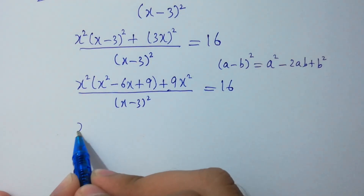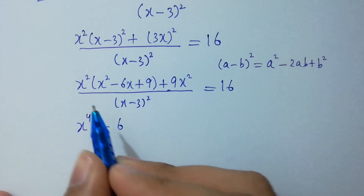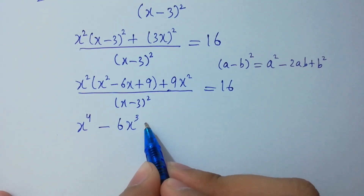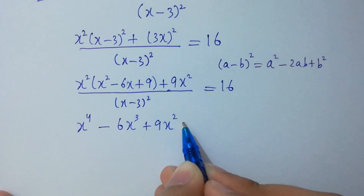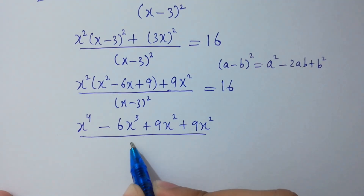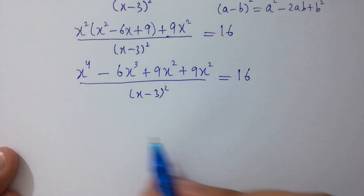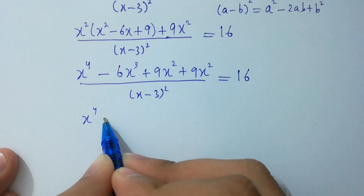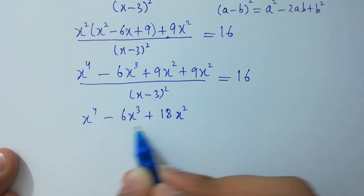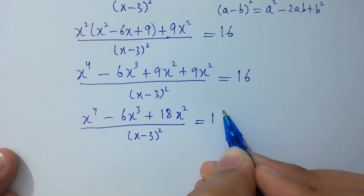Expanding x²·(x - 3)²: x² times x² gives x⁴, minus 6x² (power 1+2), that is minus 6x³, plus 9x². Then adding 9x² over (x - 3): combining 9x² and 9x² gives 18x² over (x - 3).